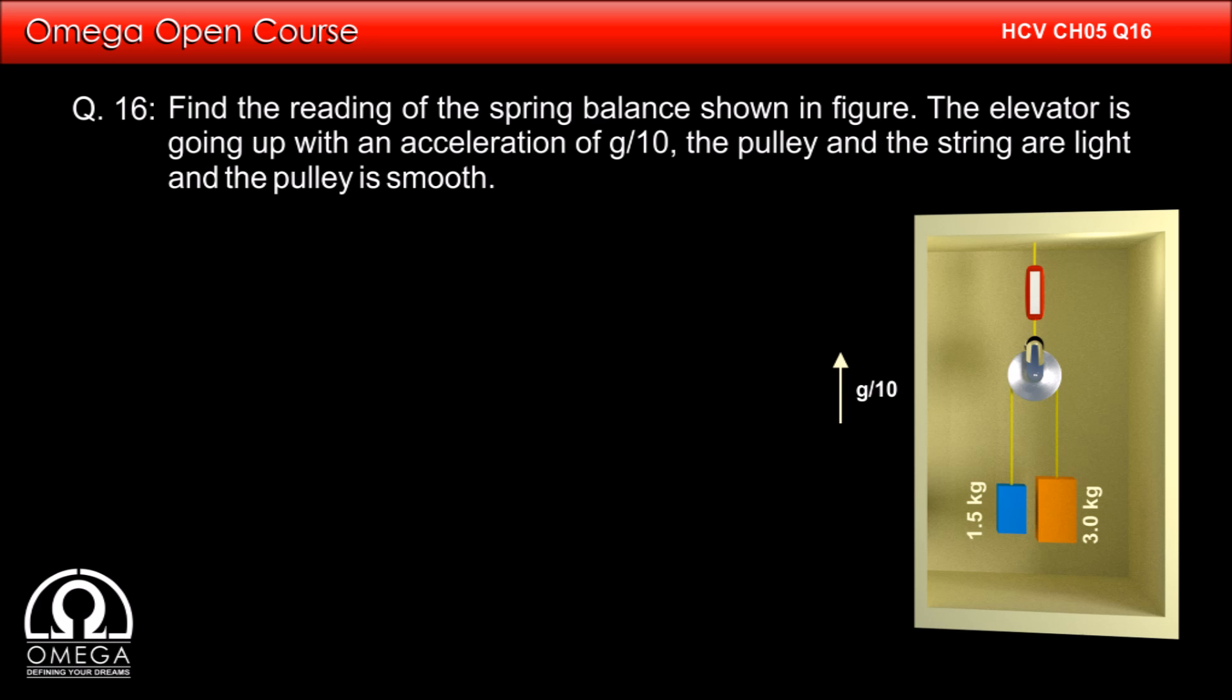Find the reading of the spring balance shown in the figure. The elevator is going up with an acceleration of g by 10. The pulley and the string are light and the pulley is smooth.